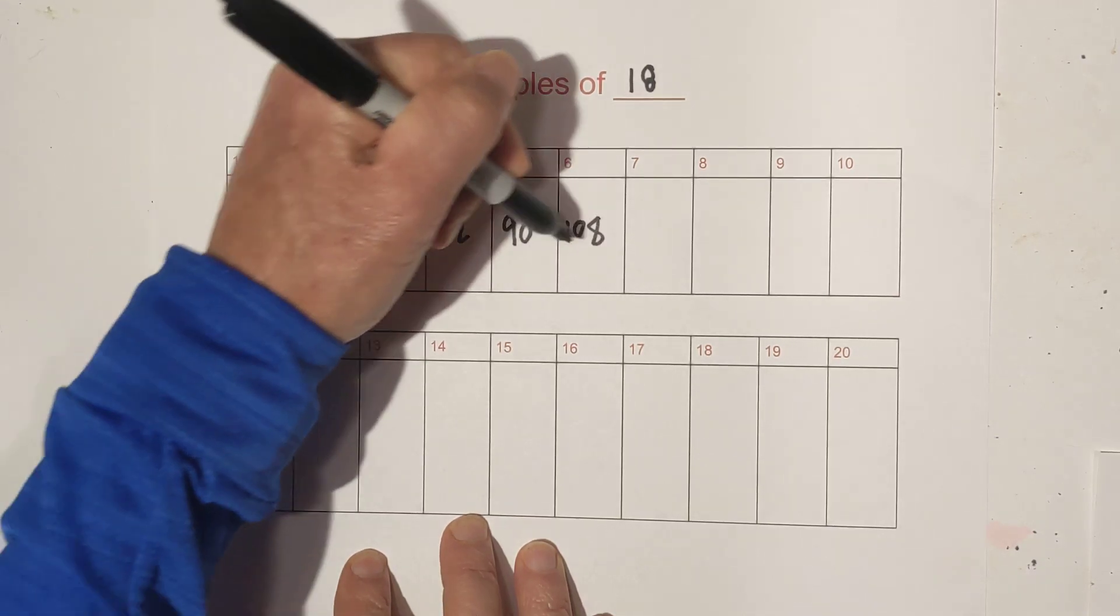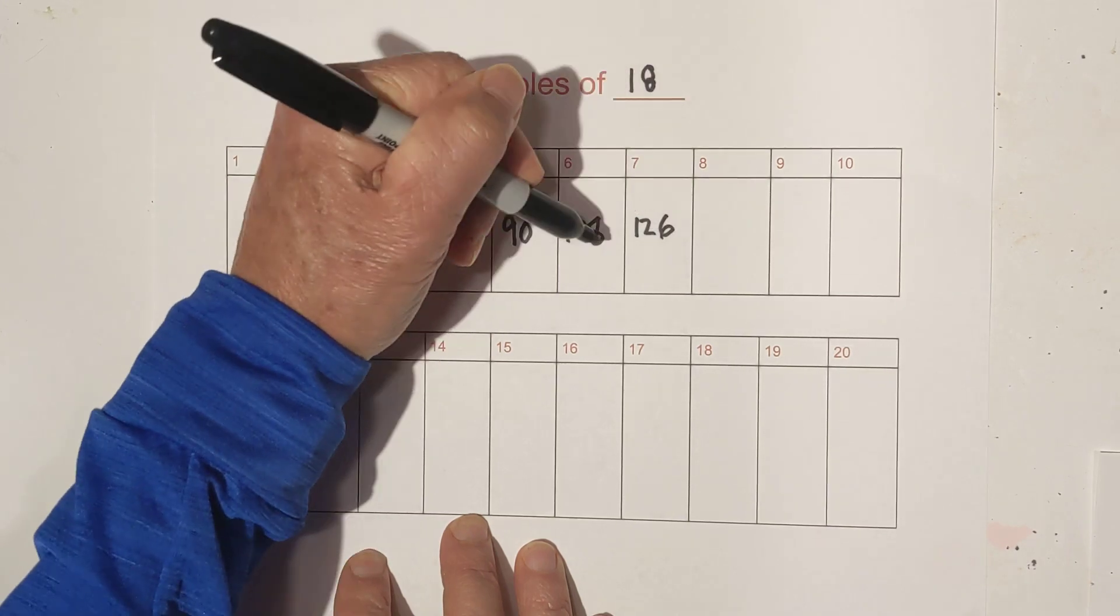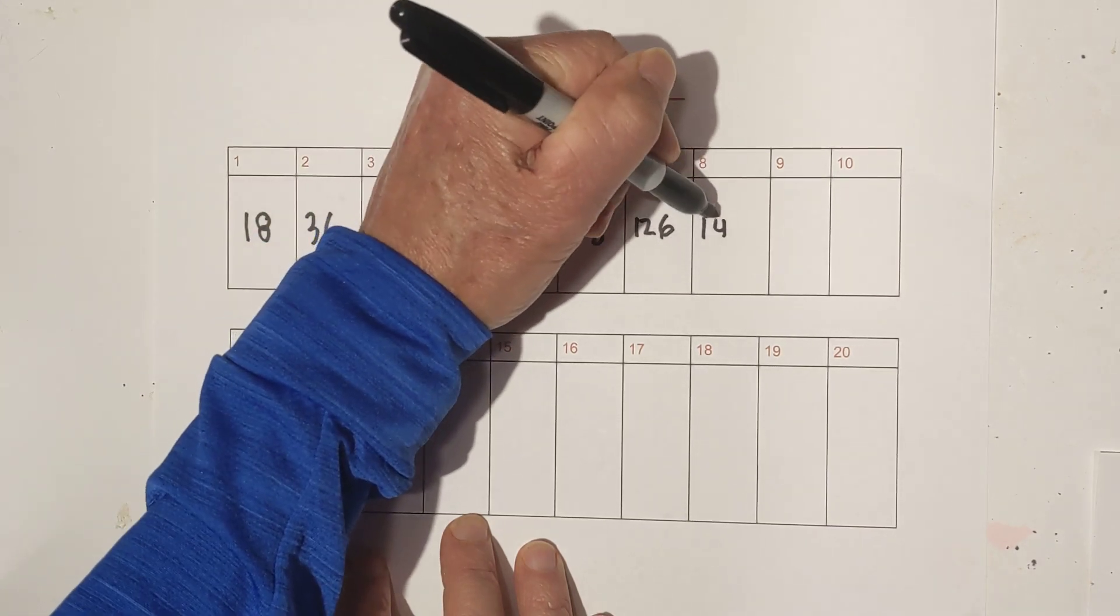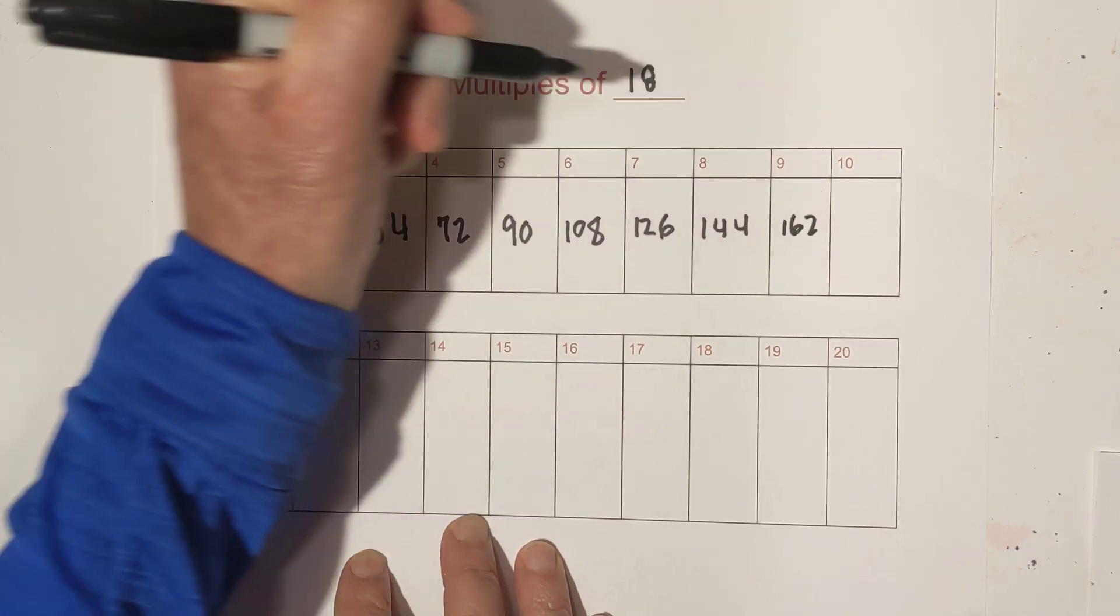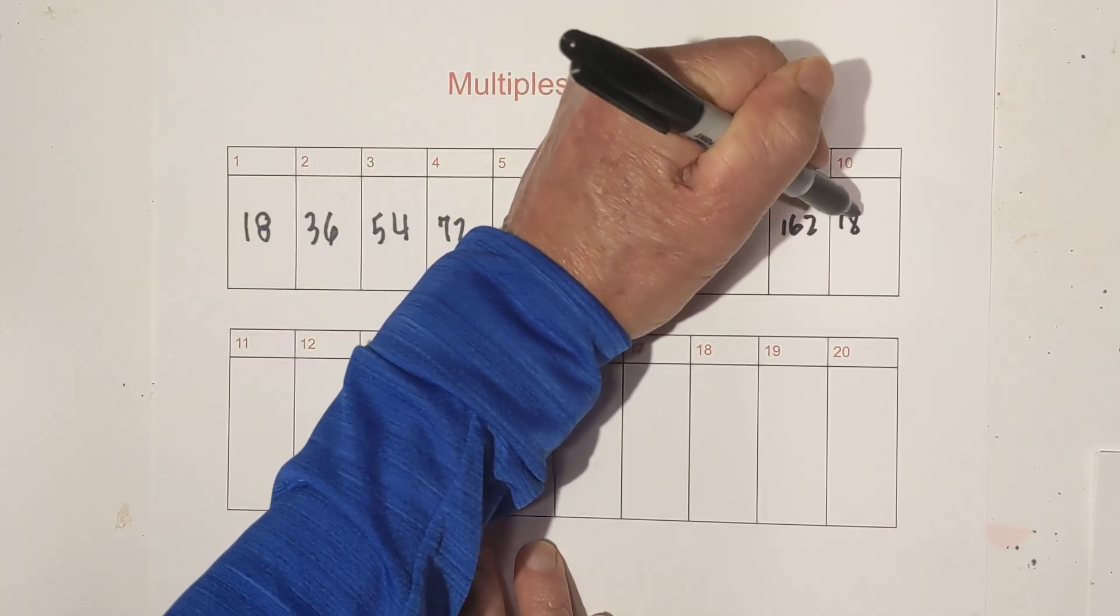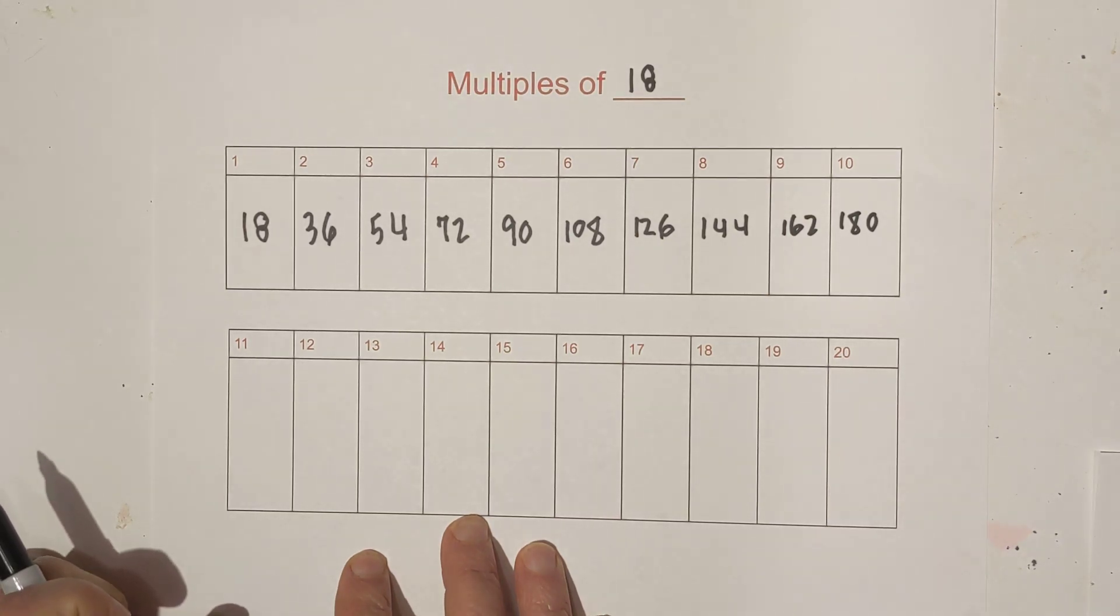18 times 7 is 126. Then we have 144, times 9 is 162. And then let's add a 0 to 18. 18 times 10 is 180.